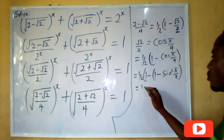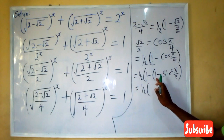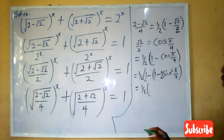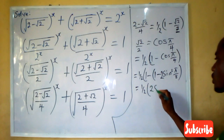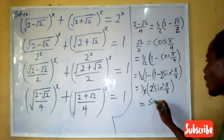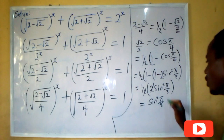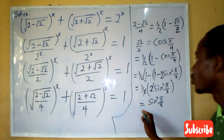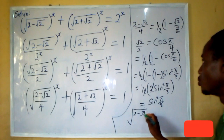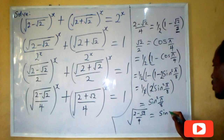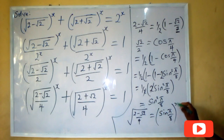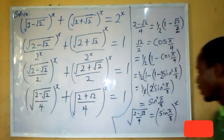So what will I have? I'm going to have 1 over 2 into — this 1 minus 1 gives 0 — and I have 2 sine squared π/8. So the 2s cancel, and we have sine squared π/8. So now it's a perfect square. Which means that the square root of 2 minus root 2, all over 4, is the same thing as sine(π/8). So completing with the x, I'm going to have sine(π/8) raised to power x.